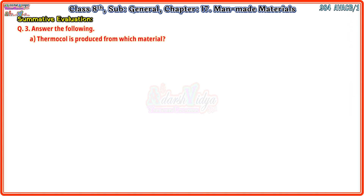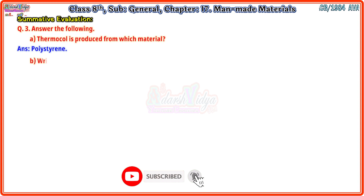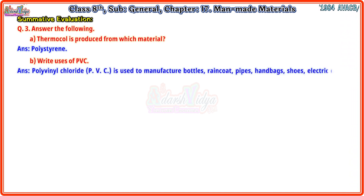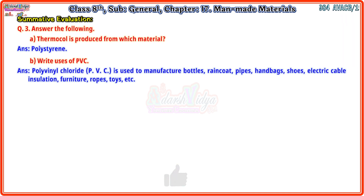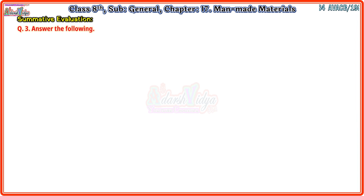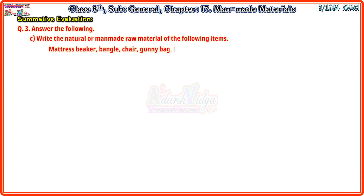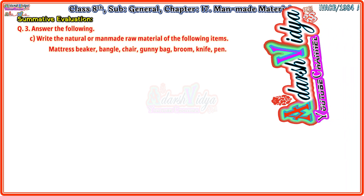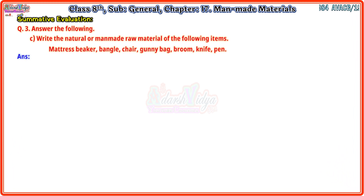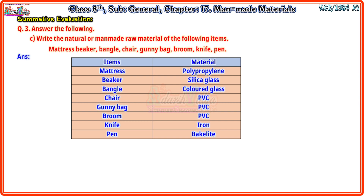Question 3 - Answer the following. First: Thermocol is produced from polystyrene. Second: Uses of PVC - Polyvinyl chloride (PVC) is used to manufacture bottles, raincoats, pipes, handbags, shoes, electric cable insulation, furniture, ropes, toys, etc. Third: Write the natural or man-made raw material of the following items - mattress: polypropylene; beaker: silica glass; bangle: colored glass; chair: PVC.